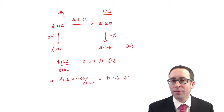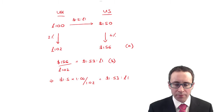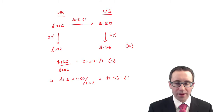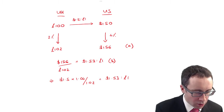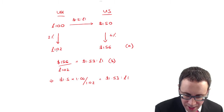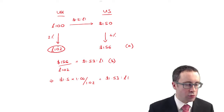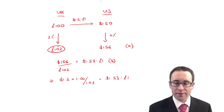So how did you get on with that one? What you should have got for part A is £100 today, and then in a year's time at 2% inflation, that's £102.